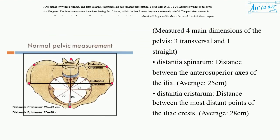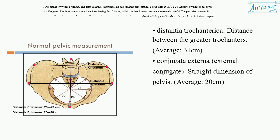Four main dimensions of the pelvis are measured: three transversal and one straight. Distancia spinorum: distance between the antero-superior axes of the ilia, average 25 cm. Distancia trochanterica: distance between the greater trochanters, average 31 cm. Conjugata externa (external conjugate): straight dimension of the pelvis, average 20 cm.